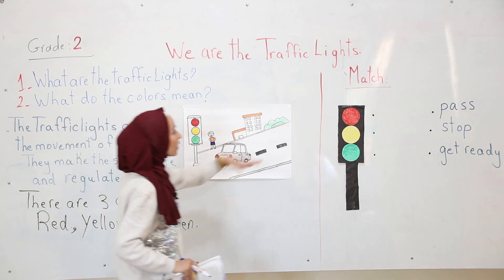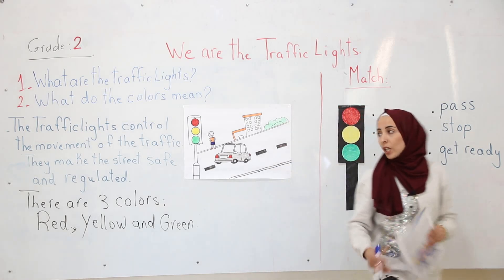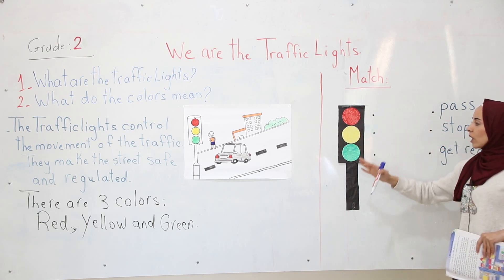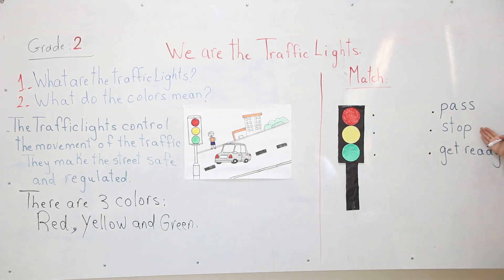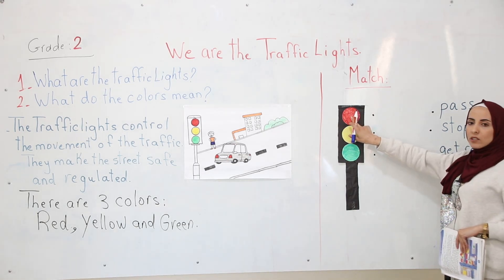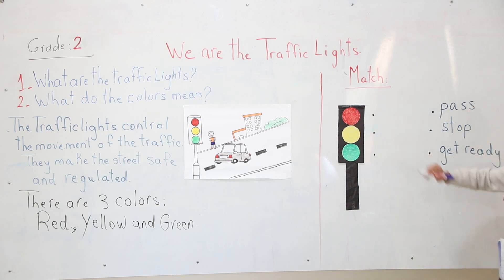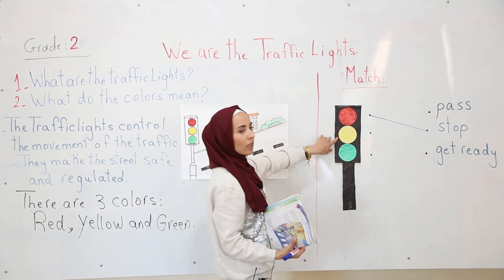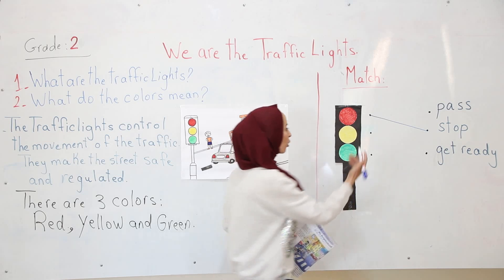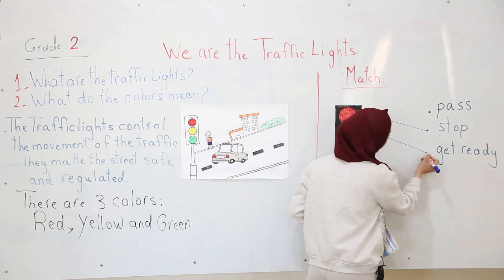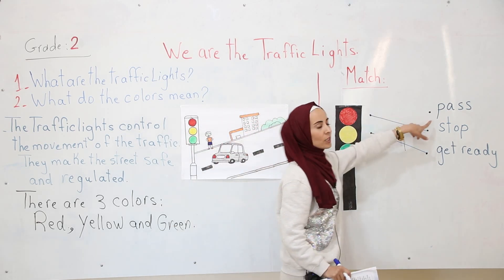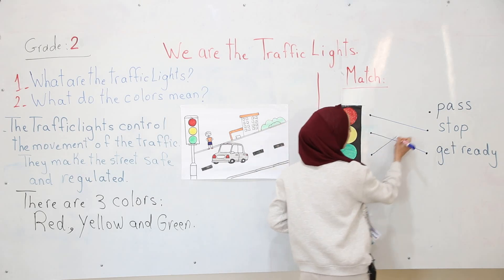Let's do an exercise to make it more clear. Here we have the colors and we have to match them with the word. We have red color, yellow color, and green color. Here we have: pass, stop, and get ready. The red color means stop, so we match the red color to stop. The yellow color means get ready, so we match it to get ready. The green color means pass or go, so we match it accordingly.